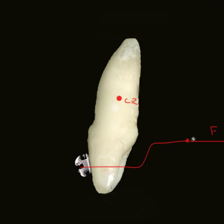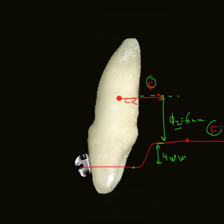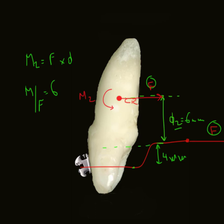Now assume that we have incorporated a wire that is 4 millimeters away and has a different shape. What happens is the distance, which was 10 millimeters, becomes 6 millimeters, or D2. The same force is found at the center of resistance. You will also have a moment given by the force F, but this time M2 equals F times D, so M over F equals 6 millimeters. By varying the line of action of the force, the moment-to-force ratio changes.